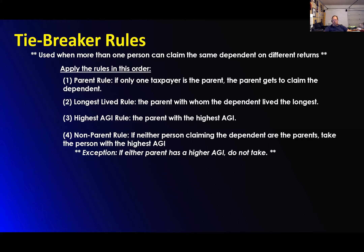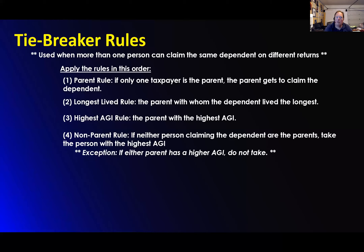Then the longest live-with rule. Let's say two parents are debating this. The parent with whom the dependent lived the longest — if one lived with them for seven months and one for five months, seven months gets it. Here's when it gets really tricky: when one lived with them for six and a half months, the other five and a half months, and they start splitting hairs over a couple of days. Yes, that has happened. Yes, it is a royal pain because they start trying to prove days to each other.